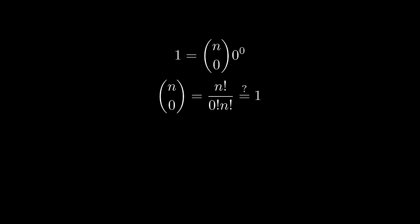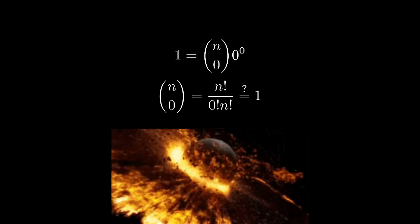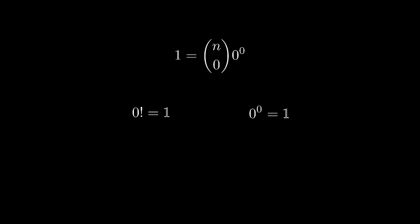if we expand and choose 0, we get n factorial over 0 factorial, n factorial. Houston, are you reading this? It seems that the two most fascinating expressions collide. If 0 factorial is 1, then 0 to the power of 0 is 1.